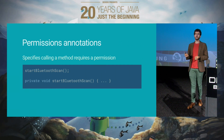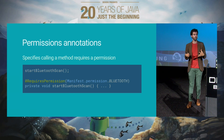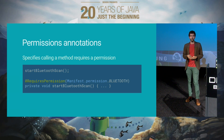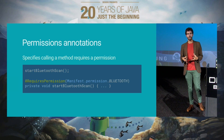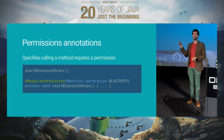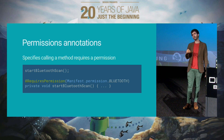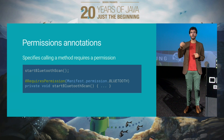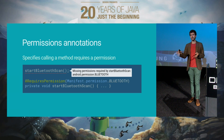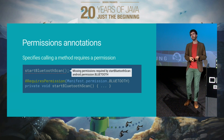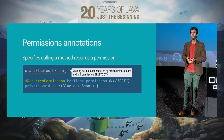Next up is permissions. With Marshmallow especially, you need to be very careful with the permissions you call, because you might or might not have permissions at runtime. For example, if you have a method that will start a Bluetooth scan, you want to annotate that method to say this method is actually going to require this permission. If you try to call it from an application that doesn't have that permission in the manifest, the IDE will tell you before you run the application: this is not going to work because you don't have that permission.